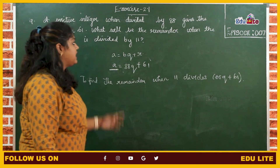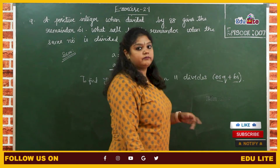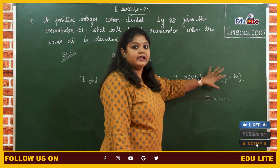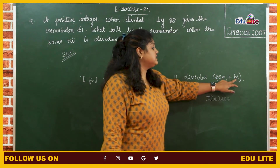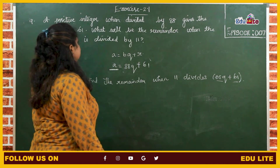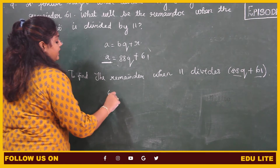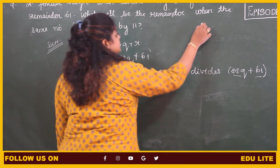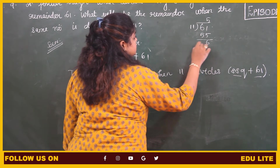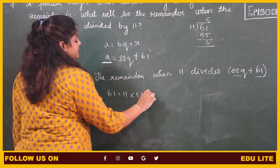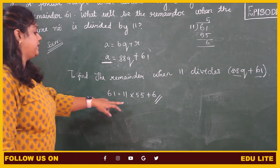88 is obviously a multiple of 11, so we need not bother about that part — it will give remainder 0. Now what we have to do is find the remainder when 61 is divided by 11. So 61 divided by 11: 5 times 55, remainder 6. So 11 into 5 plus 6. Therefore 6 is the remainder when this number is also divided by 11.